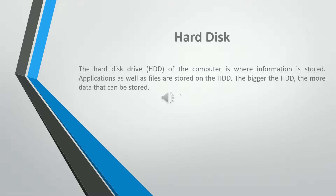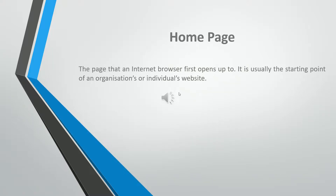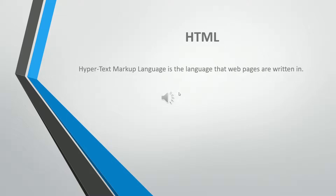The hard disk drive (HDD) of the computer is where information is stored. Applications as well as files are stored on the HDD. The bigger the HDD, the more data that can be stored. The home page is the page that an internet browser first opens up to. It is usually the starting point of an organization's or individual's website. Hypertext Markup Language (HTML) is the language that web pages are written in.